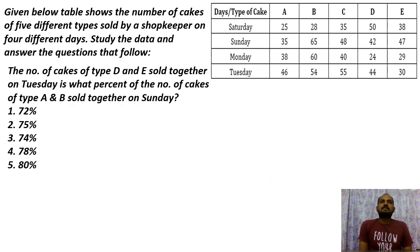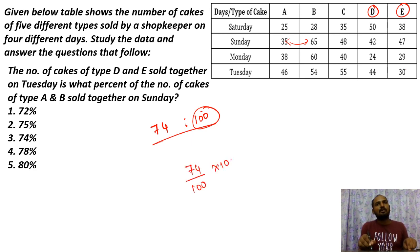The number of cakes of type D and E sold together on Tuesday. D and E on Tuesday: 44 plus 30 equals 74. Is what percent of the number of cakes of type A and B sold together on Sunday? A and B on Sunday: 35 plus 65 equals 100. So 74 is what percent of 100? That's 74%.